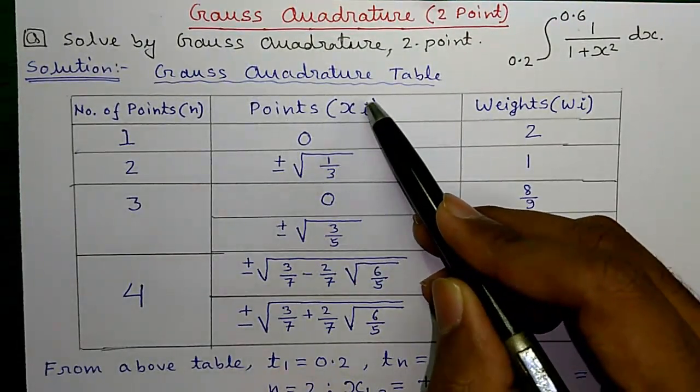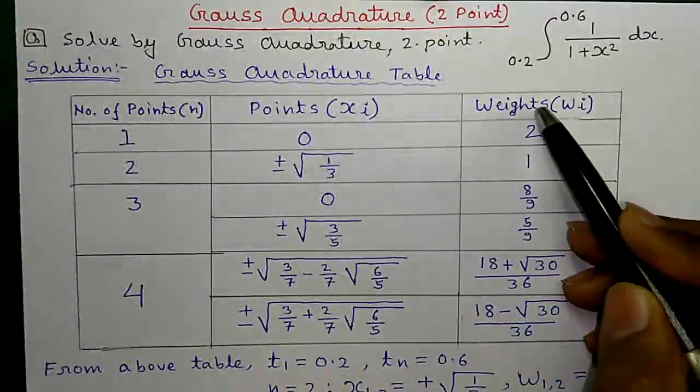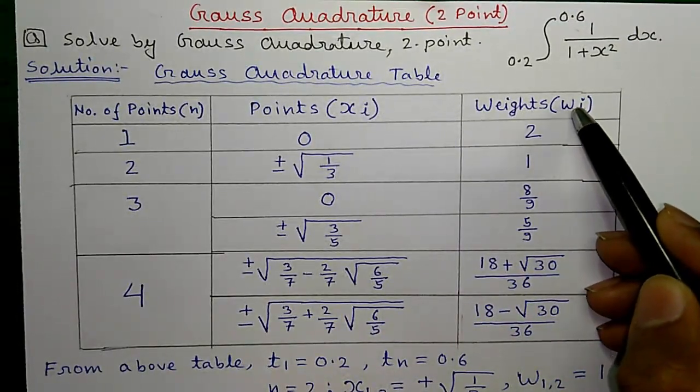Next, the points denoted by xi. Next, the weights denoted by wi.